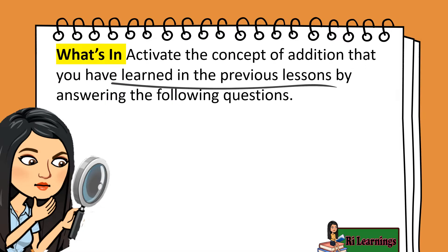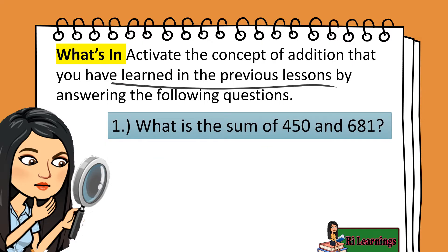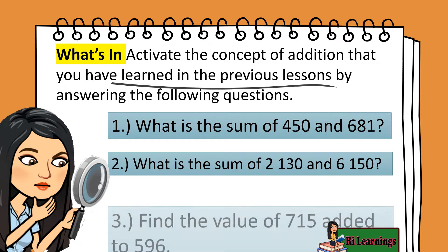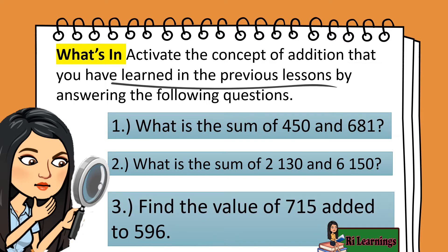What's in action? Activate the concept of addition that you have learned in the previous lessons by answering the following questions. 1. What is the sum of 450 and 681? 2. What is the sum of 2,130 and 6,150? 3. Find the value of 715 added to 596.